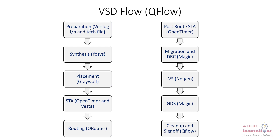All the routes are in the chip, the blocks have been placed, and timing analysis is done. Now what we need to do is check for any errors. There is a step that is migration and DRC — that is checking for electromagnetic errors. DRC is a design rule check. These are done using the Magic tool, which is the layout generation tool in this flow. Next is Layout vs. Schematic — LVS — performed using NetGen software. The final GDS files after migration and DRC will be opened in Magic, and after that we reach the final cleanup and sign-off, having the final chip. This whole process is completed using Qflow.